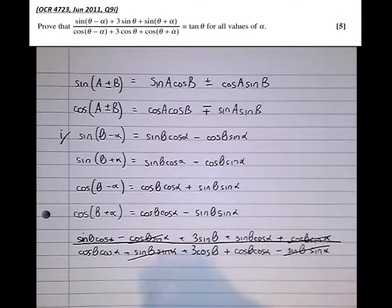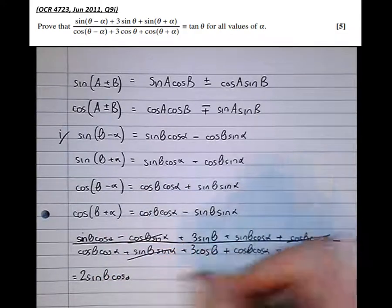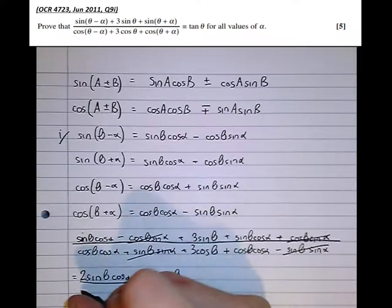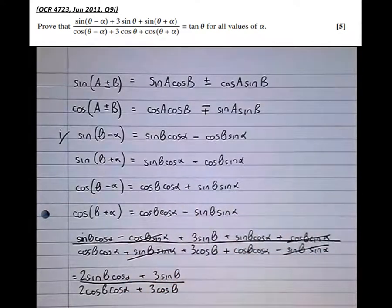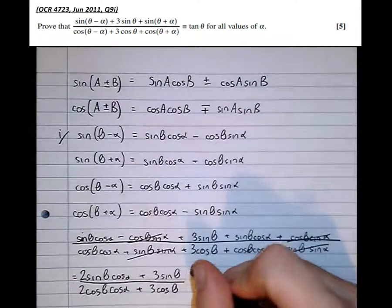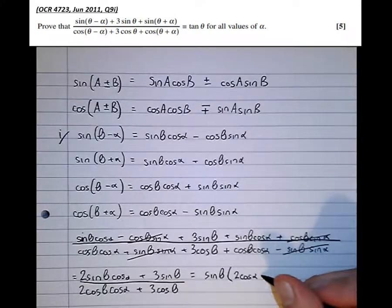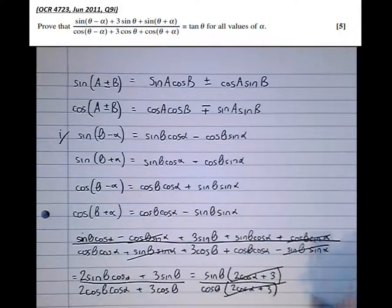Rewriting it out, we've got two sine theta cos alpha, plus 3 sine theta, over two cos theta cos alpha, plus 3 cos theta. Taking out a factor of cos theta on the bottom, the two cos alpha plus 3 terms cancel with the top, leaving us with sine theta over cos theta, which equals tan theta, as we were asked to show.